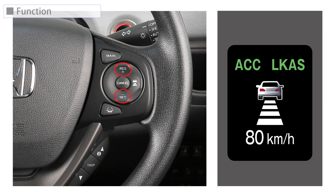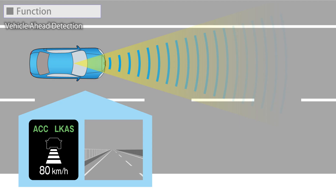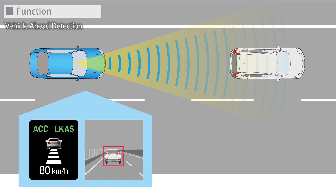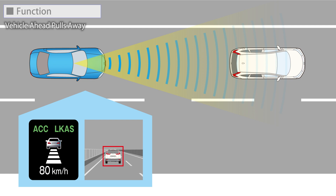During normal driving, when a vehicle in front enters the range of the camera and millimeter wave radar, the system measures the distance and speed difference and follows the vehicle while maintaining a set distance. The distance between the vehicles can be set to four different levels with a distance switch.